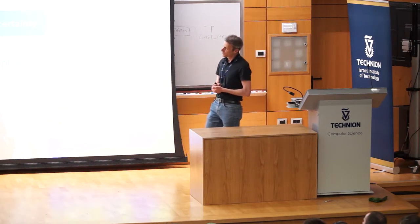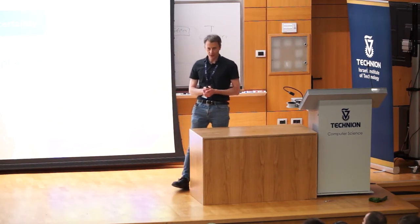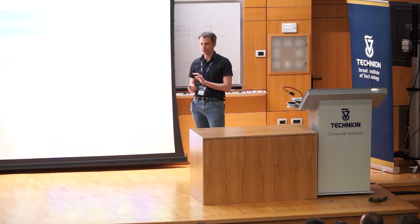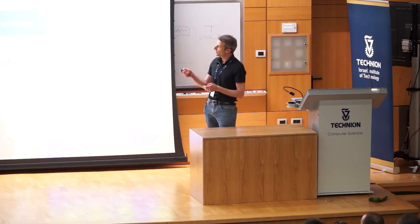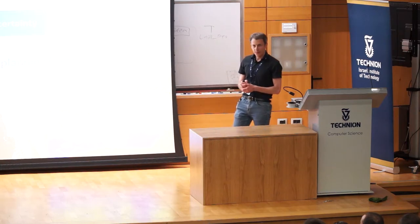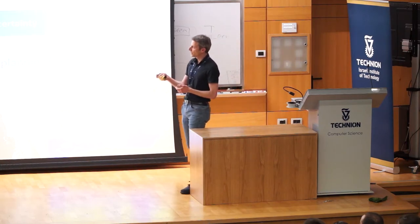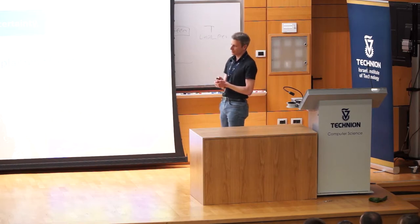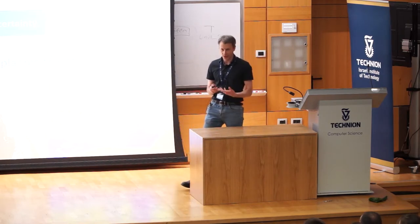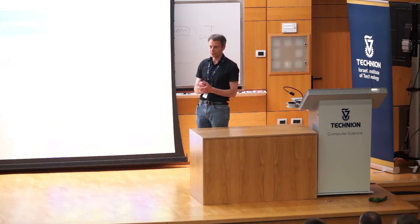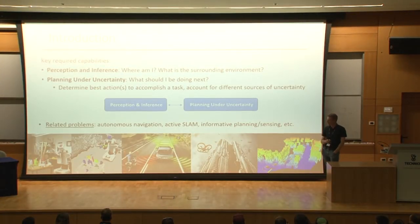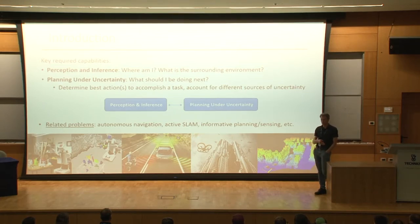On top of that, we may want to ask another question: how do we do planning while accounting for different sources of uncertainty, given very partial and noisy information? We want to be able to determine what the agent should do next. These two problems — perception and planning — are tightly connected, and their solutions apply to many practical problems: tunnel navigation, active SLAM, informative planning, informative sensing, robotic surgery, autonomous navigation on Mars, and much more.